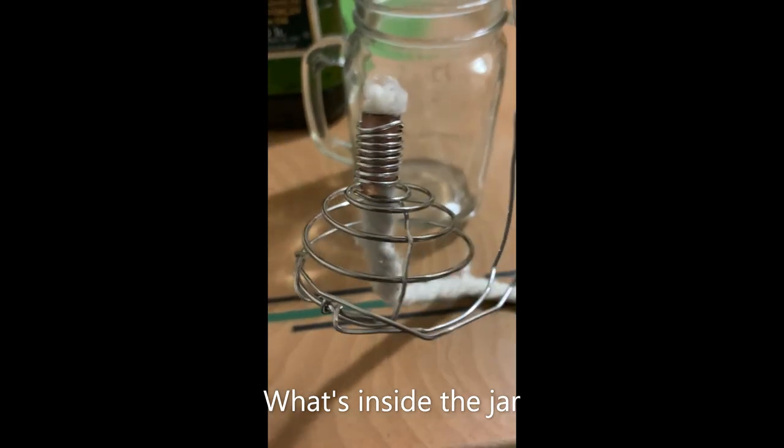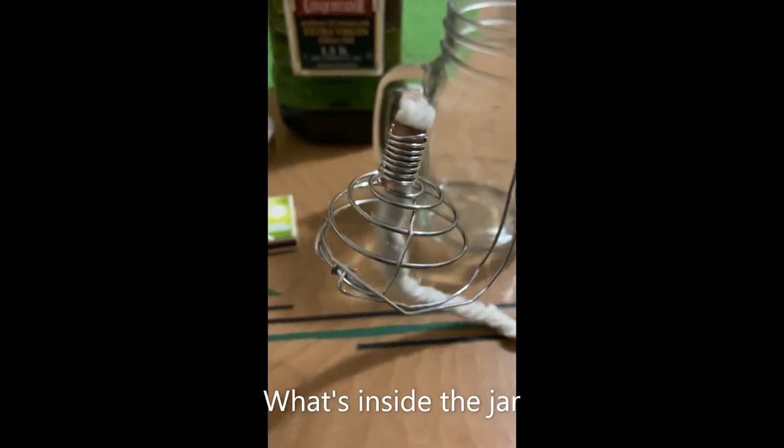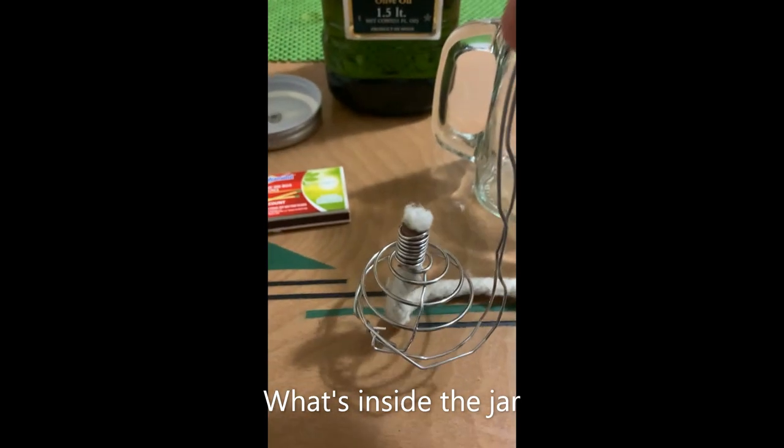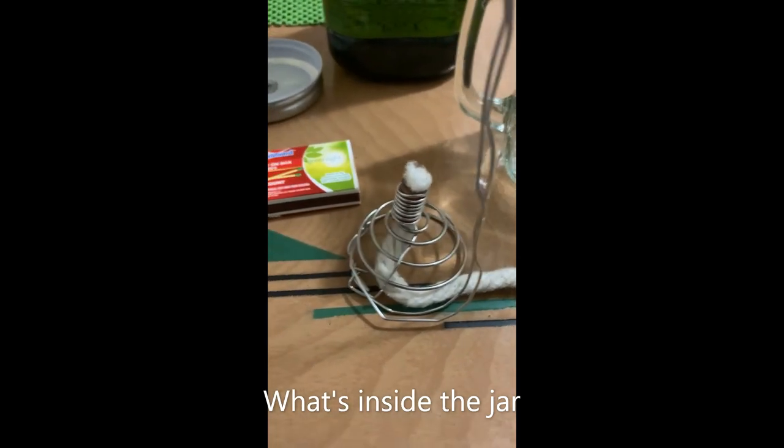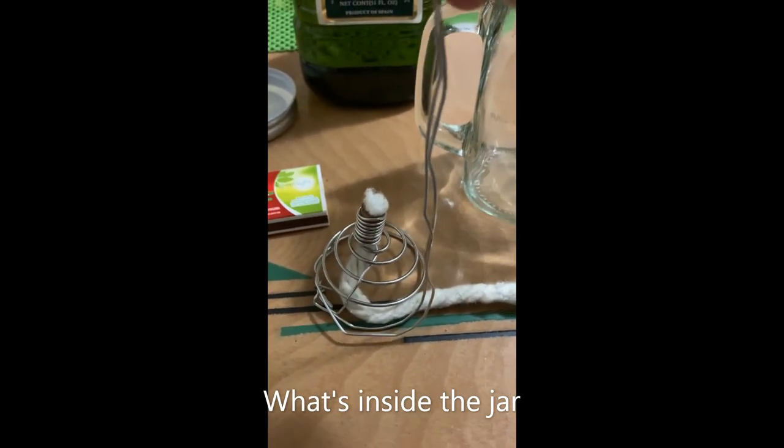Those little metal stir shaker balls—I cut that in half, and then I took some aluminum wiring and came up with this contraption. Why I like this: the wick here is 100% cotton, and you can go inside here.